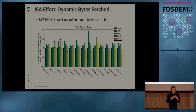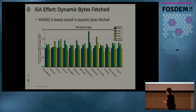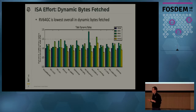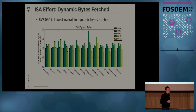An important metric for supercomputer or high-end implementations is the number of dynamic bytes fetched, which is largely the maximum performance you can get from the machine. RISC-V has the smallest number of dynamic bytes fetched across all instruction sets — it's smaller than x86, which surprises people since CISC instruction sets are thought to be fairly densely encoded. Additionally, it is 25% smaller than ARM.